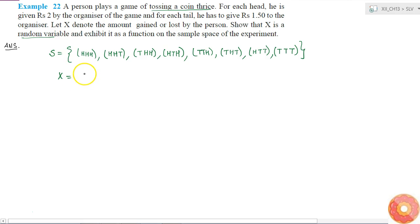X equals 2 times the number of heads. This is what he will get. And if he gets tails, he has to give Rs. 1.5 times the number of tails. This is the amount gained by the person.